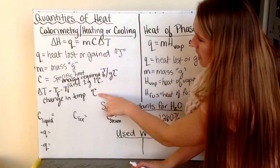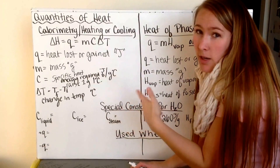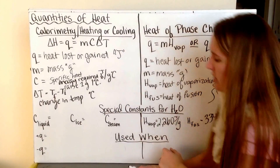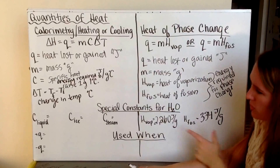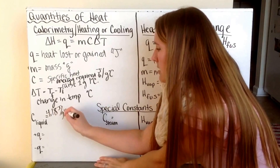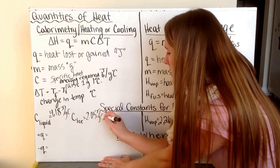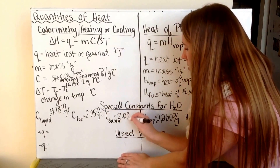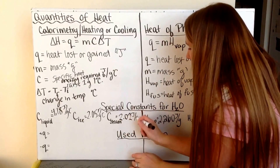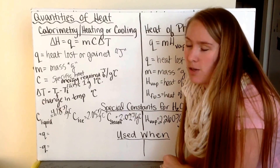For calorimetry problems we look at specific heat, which is different for all three phases of water and for any metal we're using. These are found on your reference guide, as are the heat of vaporization and heat of fusion. Specific heat of liquid water is 4.18 joules per gram degree Celsius, ice is 2.05, steam is 2.02, and all metals will have different values also listed on your reference guide.